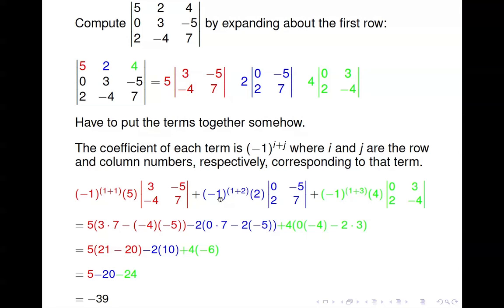For the green term, negative 1 to the 1 plus 3 is positive 1, giving plus 4 times the determinant 0 times negative 4 minus 2 times 3. Combining further: 21 minus 20 times 5, then 0 plus 10 gives 10, and 0 minus 6 gives negative 6. Adding it all up, we get negative 39 for the determinant of this matrix.